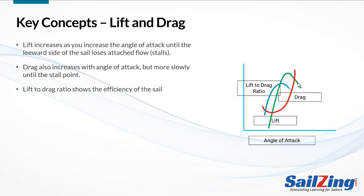The lift-to-drag ratio shows how efficient the sail is at various angles of attack. We want the combination that produces the most lift for the least drag. As it turns out, the most efficient angle of attack occurs when the windward side of the sail is still slightly stalled, but before the leeward side of the sail stalls — right here on the graph.